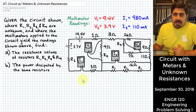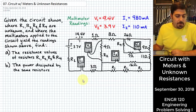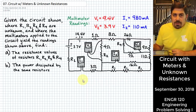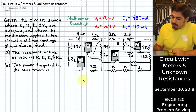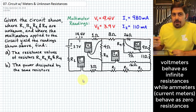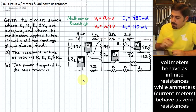What I'd like to work through today is a problem that's a little bit different than some of the circuit problems you've probably seen up till now. This problem is different because there are some unknown resistances, and we are given some data about various voltages or currents that are directly measured with multimeters in this circuit. The first thing I want to do is describe how a voltmeter and an ammeter behave when they are in a circuit.